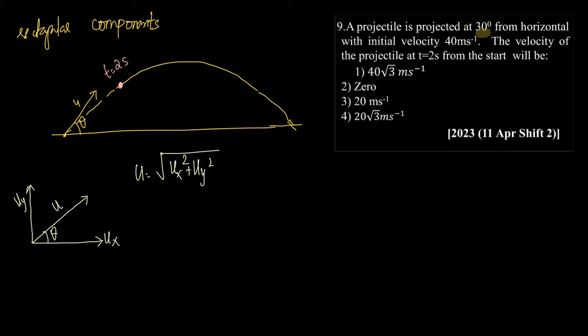Now, once we have this, we can find out that ux is equal to u cos theta from the triangle and uy is equal to u sin theta from the triangle, right, from this triangle, okay?